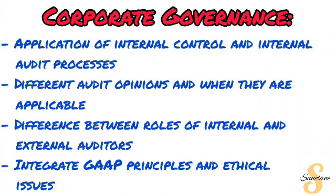The last topic in your Paper One is Corporate Governance. First, be able to apply internal control and internal audit processes — internal control involves making decisions about problems in the company, such as theft or missing stock, and recommending how to proceed. You also need to know the different audit opinions: qualified opinion, unqualified opinion, and disclaimer of opinion, and when each applies. Be able to differentiate between the roles of an internal auditor and an external auditor. Lastly, they can integrate the King principles as well as ethical issues, and you need to comment, give recommendations, and provide solutions.